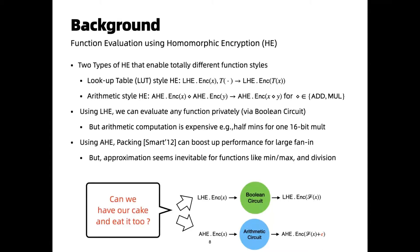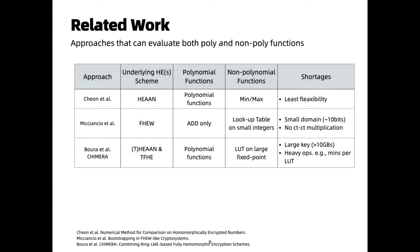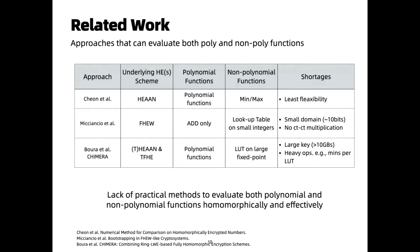Can we use HE to evaluate polynomial and non-polynomial functions simultaneously? Some approaches do provide a way to evaluate both. CHE and ETL propose a method to compute argmax of encrypted values using an arithmetic HE scheme. On the other hand, Méaux's method uses the FHEW scheme to compute lookup tables on small integers. However, FHEW allows only ciphertext addition, and ciphertext multiplication is not supported. The most promising prior art is Frombra et al., who present a framework called Chimera, which allows more flexible polynomial and non-polynomial evaluation. But Chimera suffers from huge key size and heavy computation. We still lack practical methods to evaluate both polynomial and non-polynomial functions homomorphically and efficiently.